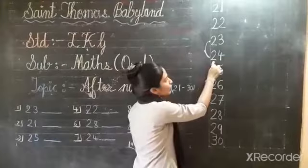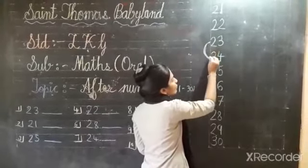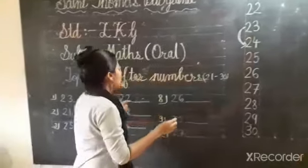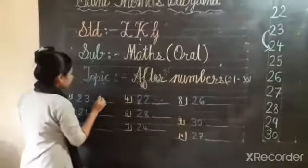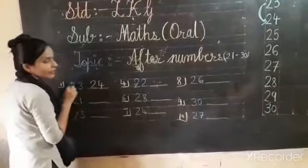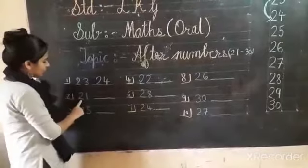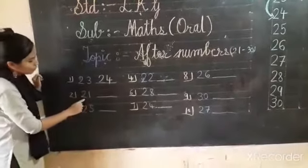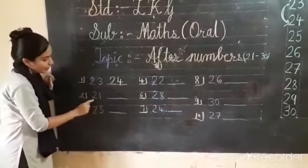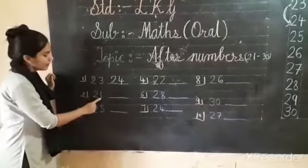2, 4 — 24. So I will write here: 2, 4, 24. Next one is 2, 1 — 21. The after number of 21 — 2, 1, 21.